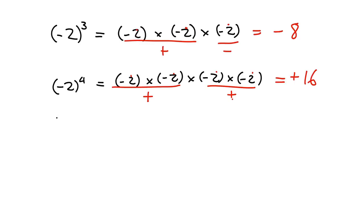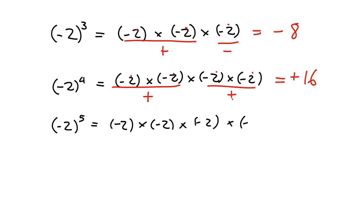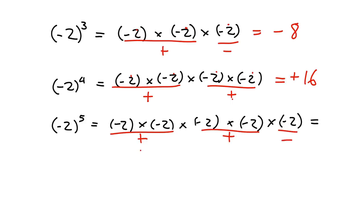What if we had negative 2 to the power of 5? We're going to put negative 2 down 5 times and multiply them all together. I want you to quickly predict for yourself — do you think the answer is going to come out as positive or negative? You group those pairs: negative times negative is positive, negative times negative is positive. So overall you've got a positive times a positive, which is positive, times a negative — it's negative. And 2 times 2 is 4, times 2 is 8, times 2 is 16, times 2 is 32. So we get negative 32.